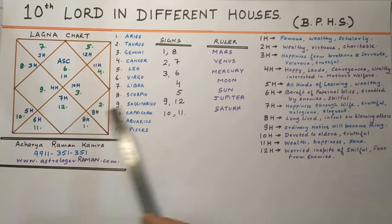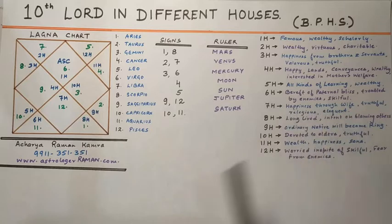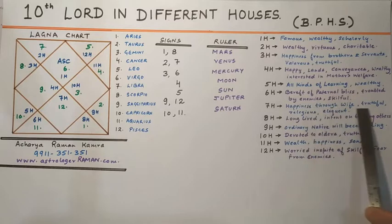If the 10th Lord is placed in the 7th house, the native will be endeared with happiness through his wife. He would also be intelligent, virtuous, eloquent, truthful, and religious.